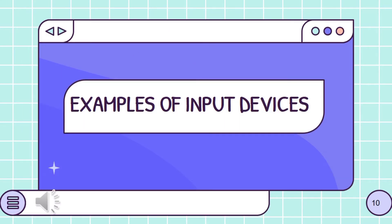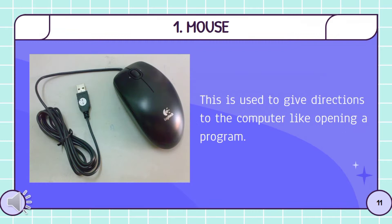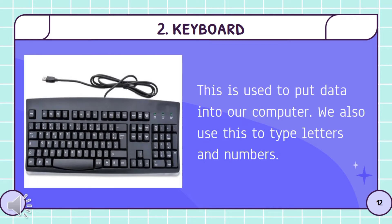Now, let's find out what are the examples of input devices. These devices are tools that are connected to our computer to do different tasks. Number 1: The mouse. This is used to give directions to the computer like opening a program. This is used to put data into our computer. We also use this to type letters and numbers.